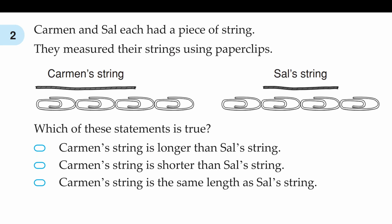Question number two: Carmen and Sal each had a piece of string and they measured their strings using paperclips. Which of these statements is true? To find out, we have to measure the string. How many paperclips long is Carmen's string? We can see that it is two and a half paperclips long, so C, short for Carmen, is equal to 2.5.